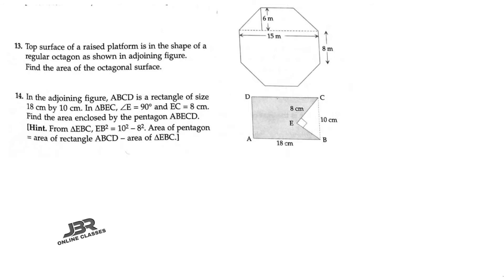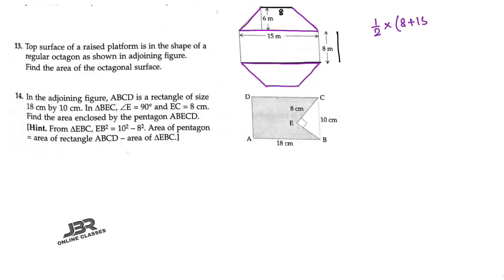Now sum number 13. The top surface of a rice platform is in the shape of a regular octagon. Find the area of the octagonal surface. The upper and lower trapeziums each have parallel sides of 8 and 15, with height 6. Area of both trapeziums = 2 × half × (8 + 15) × 6 = 23 × 6 = 138 meter square.